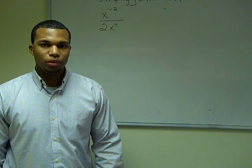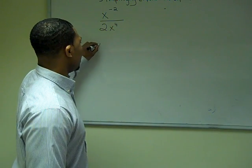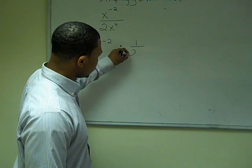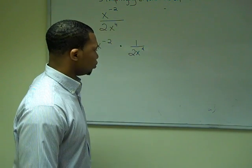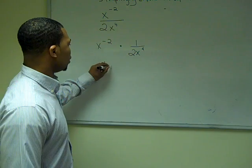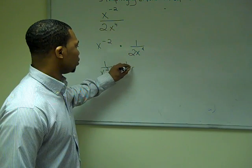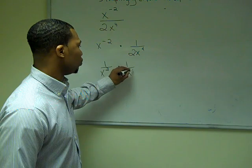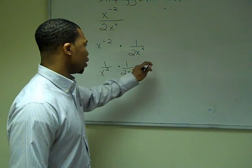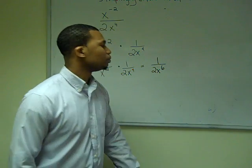For this fraction problem, I can break it up into two separate parts: x to the negative two times one over two x to the fourth. Since x to the negative second power is the same as one over x squared, I take that and multiply it by one over two x to the fourth. Multiplying straight across, my answer is one over two x to the sixth.